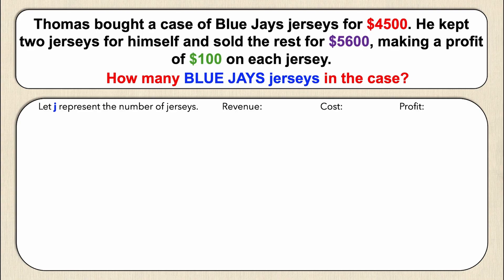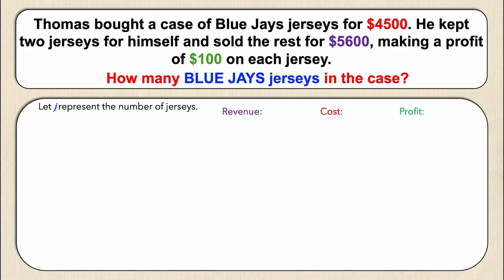In order to do that, I'm going to use the information given to calculate the revenue, the cost, and the profit. All of these calculations are going to be per jersey — so it's the revenue per jersey, the cost per jersey, and the profit per jersey. I'm going to color code these so it's easier to follow. Let's start by looking at the revenue per jersey.